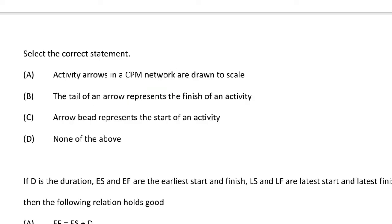Next question — select the correct statement: option A activity arrows in a CPM network are drawn to scale, option B the tail of an arrow represents the finish of the activity, option C the arrow head represents the start of an activity, option D none of the above. The correct answer is option D, none of the above.